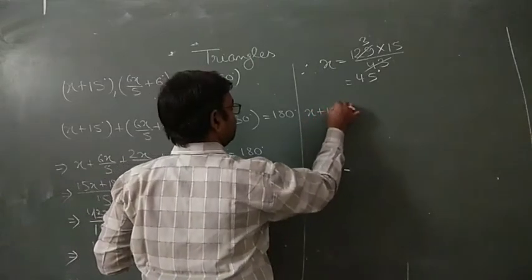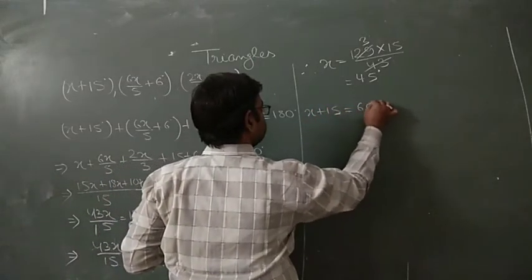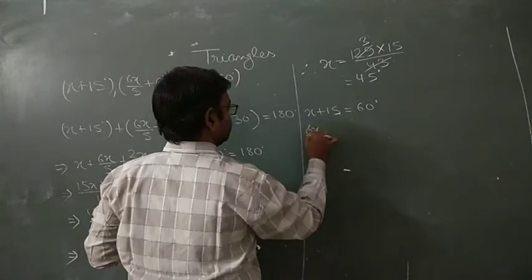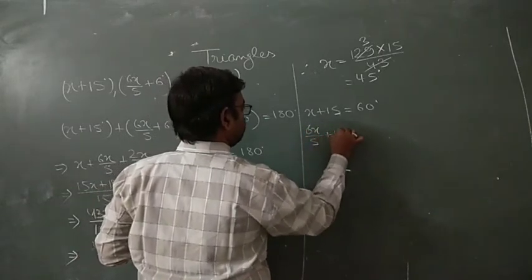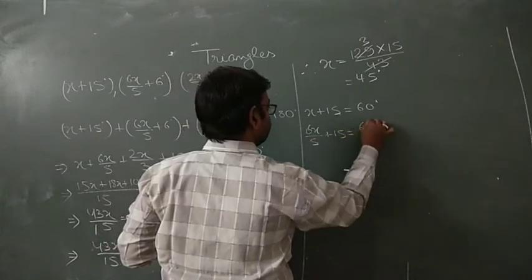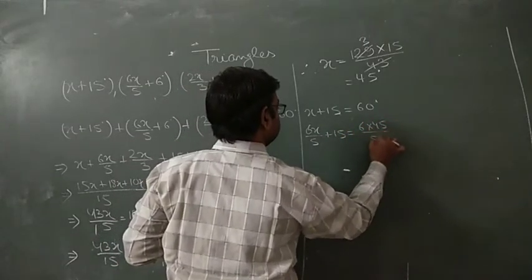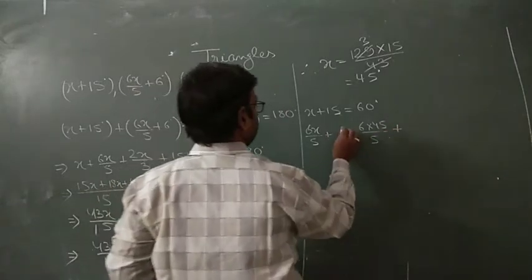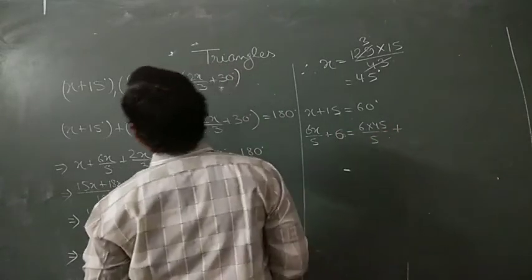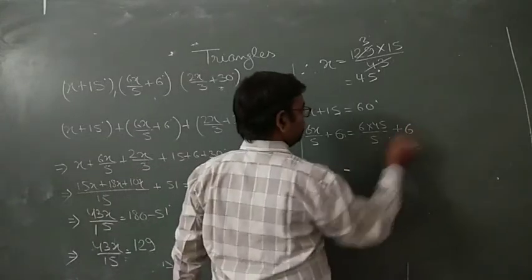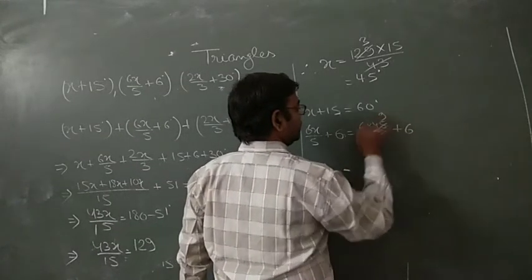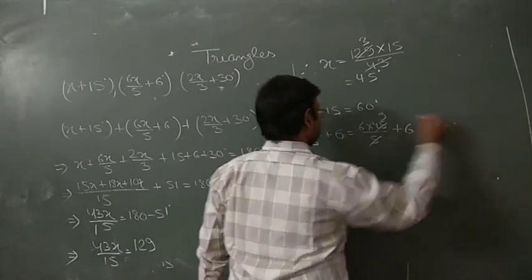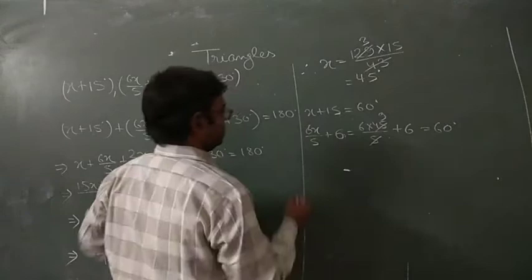Therefore the values of angles are: x plus 15 equals 60 degrees. For 6x upon 5 plus 6, placing x equals 45: 6 times 45 upon 5 plus 6 equals 54 plus 6 equals 60 degrees. Similarly the third angle is also 60 degrees.